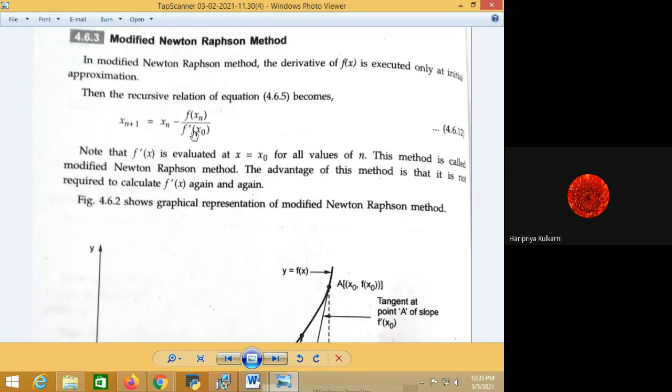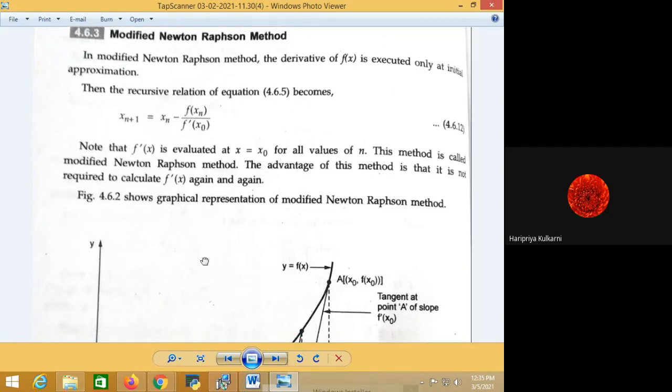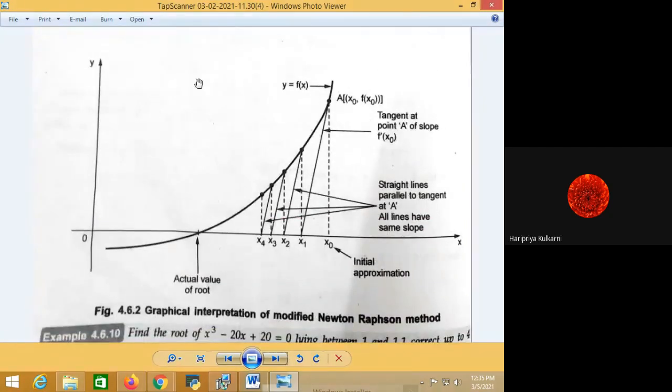Now we'll see the graphical representation and its details. Suppose this is the curve y equal to f of x which is plotted here. The initial approximation is, say, x_0. So A is a point on the curve where the root is there. We draw a tangent line at point A.